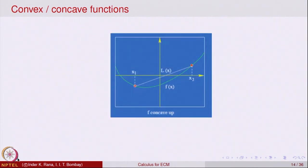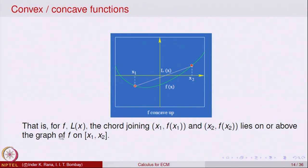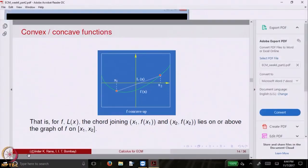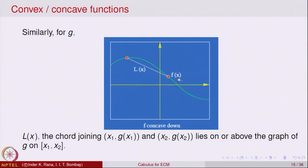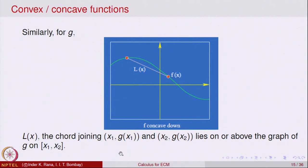Let f be a function defined on an interval I taking values in ℝ. We say f is concave upwards — also called convex — if for any two points x₁ and x₂ lying on the interval and a point x in between, the value of the function at that point should be less than or equal to the value of the chord joining them. This is the two-point formula for the line joining two points.